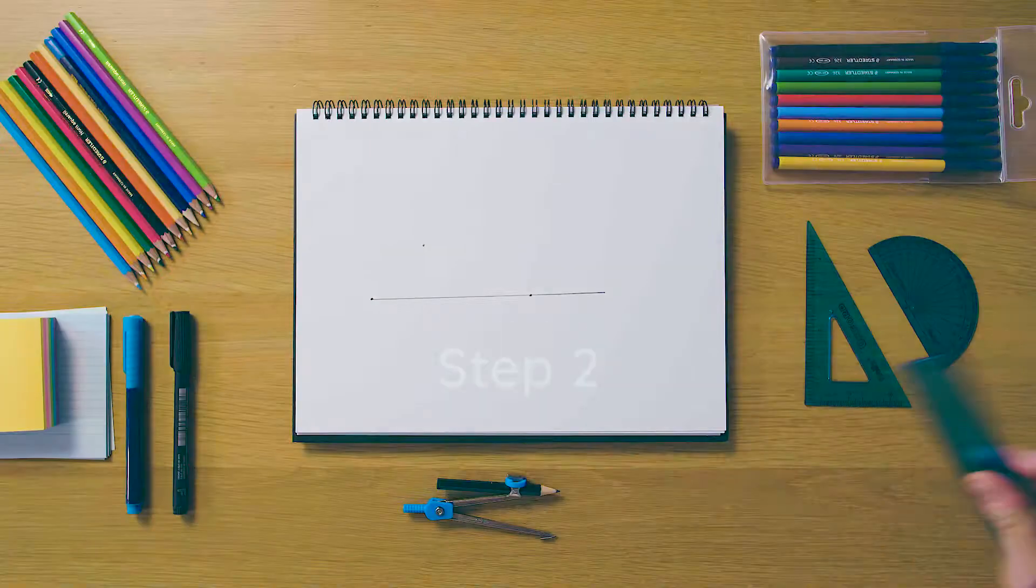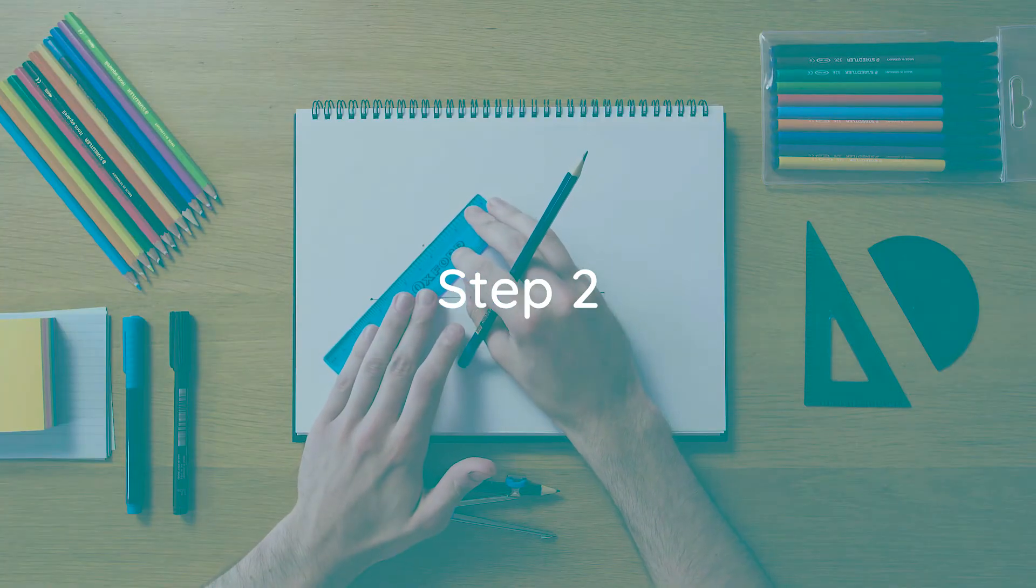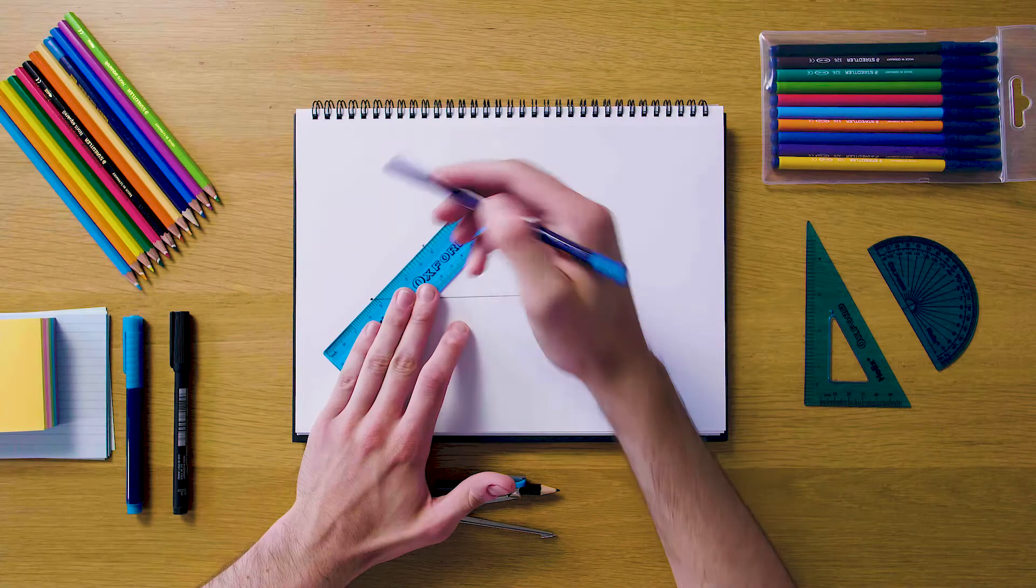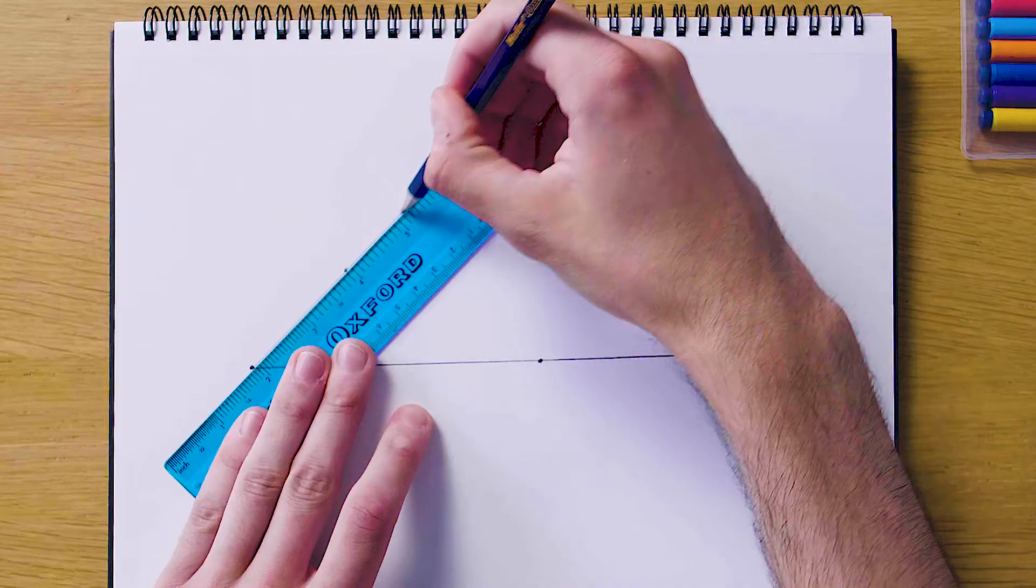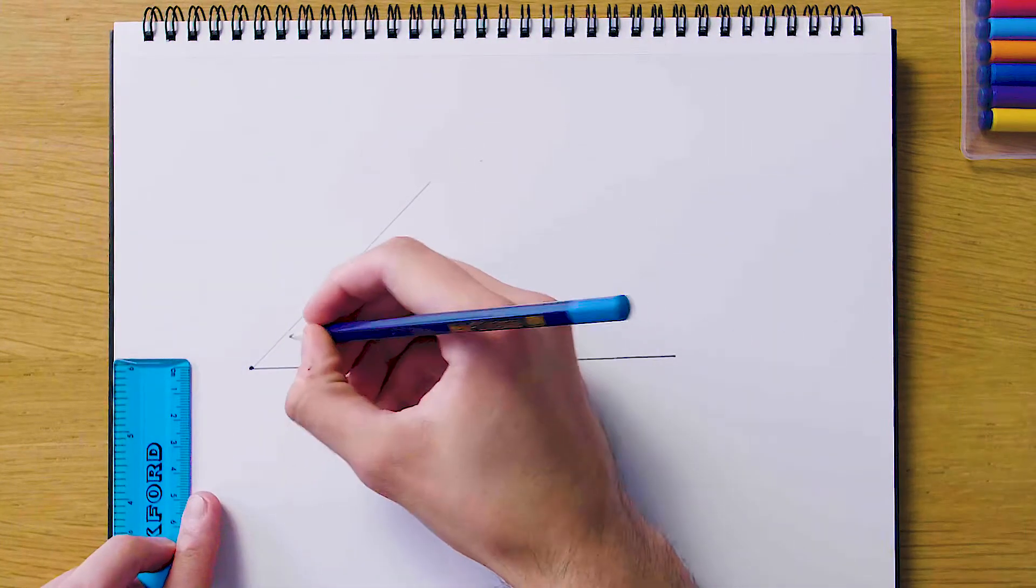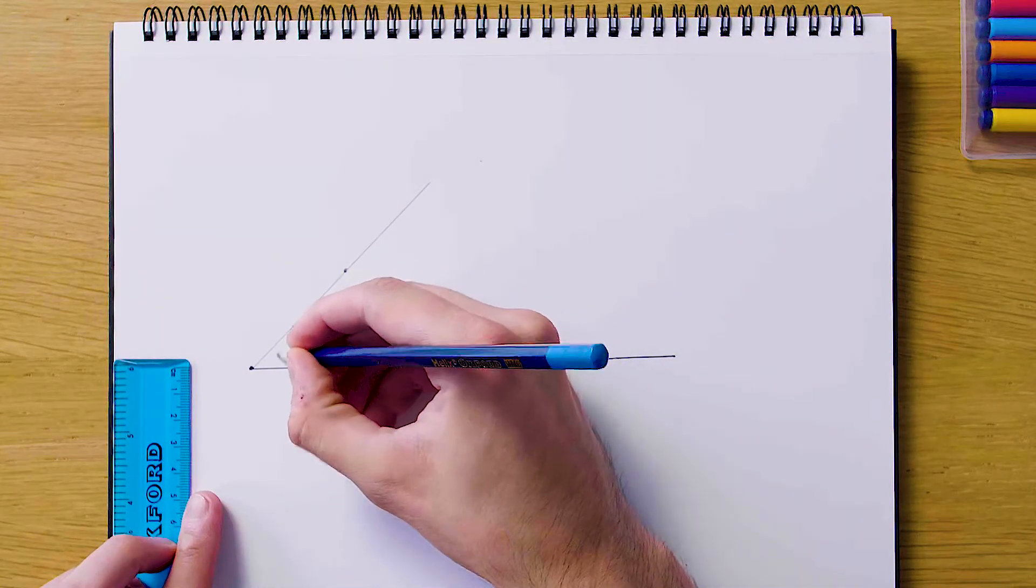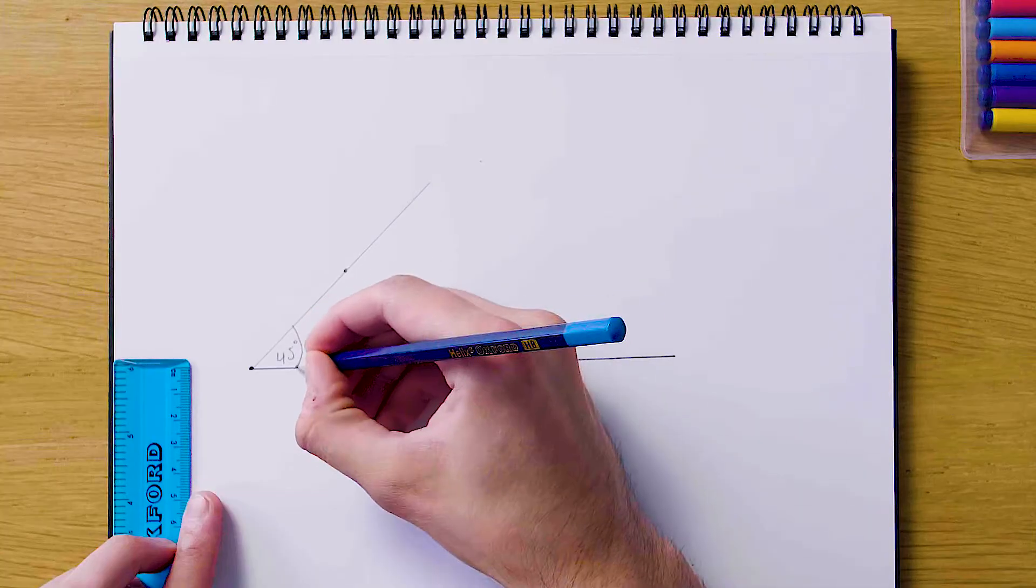Then from the endpoint of our line, through this point we created with the protractor, we're going to join those two points. We'll have a line which is at 45 degrees to our first line, which means that we are finished with our construction.